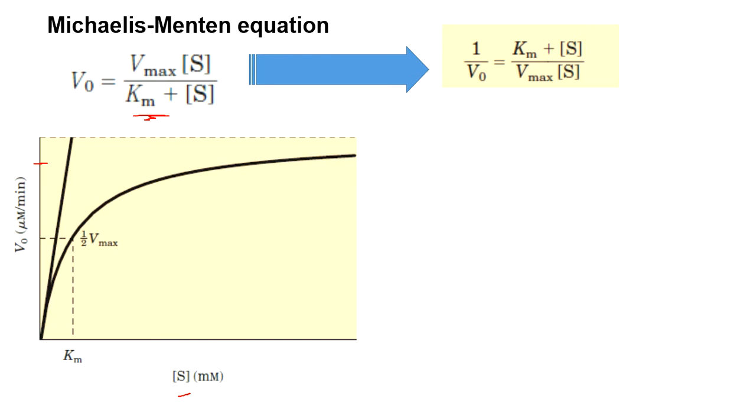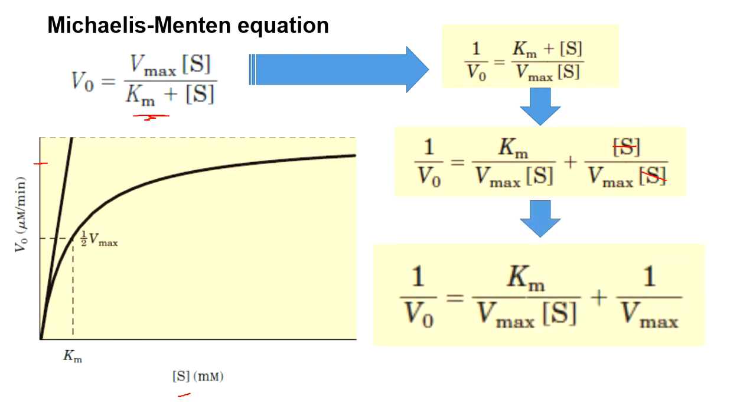The substrate concentration gets cancelled out, and from this we get an equation like this.